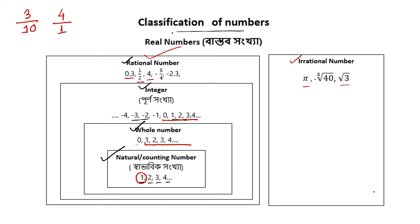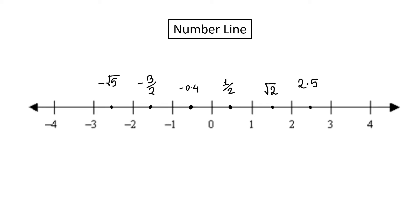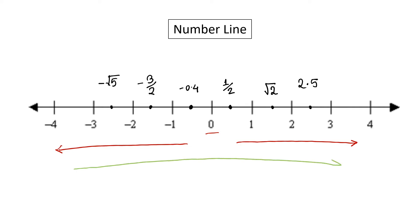The irrational number is a real number. The real number is on the number line. The number line includes zero, non-negative numbers, positive numbers, and negative numbers.